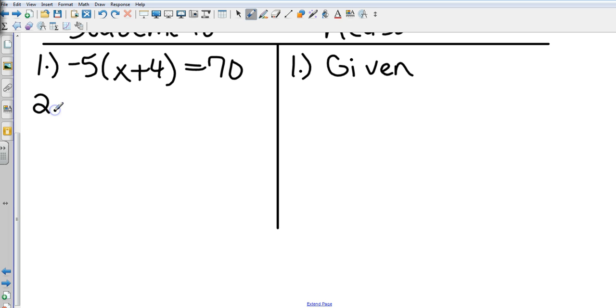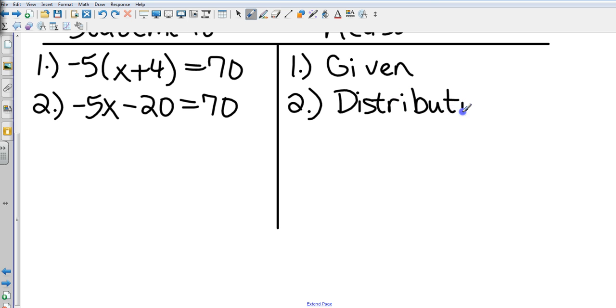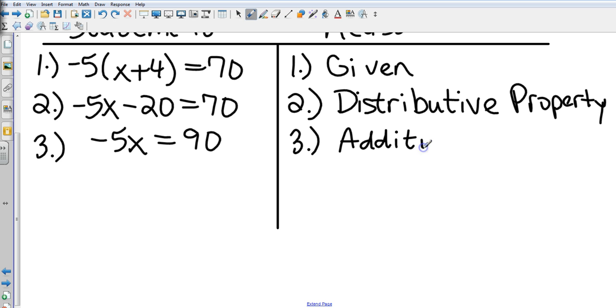Now I'm going to go to my second step and do the distributive property, taking negative 5 times x which is negative 5x minus 20 equals 70. The reason is the distributive property. Then I'm going to add 20 to both sides, so that's going to give me negative 5x equals 90. That's my addition property because I just added 20 to both sides.